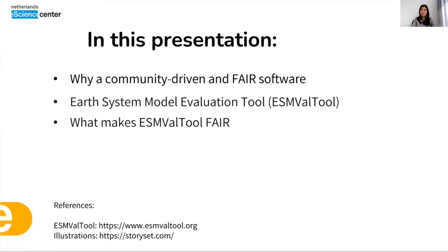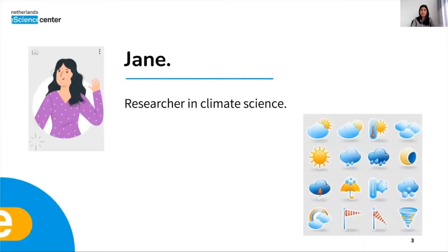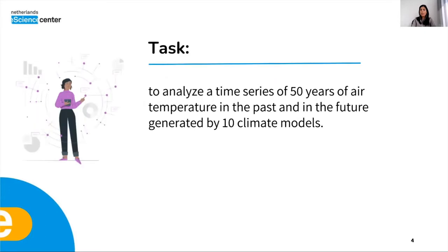Let's begin with some user stories. This is Jane. She is a researcher in climate science, and as you can see in this figure, in climate we have different variables like air temperature, precipitation, wind, cloud, and so on. She wants to analyze a time series of 50 years of air temperature in the past and in the future, generated by 10 climate models.